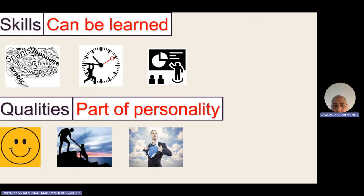Some of the skills you can write in the letter include: I can speak a language, I'm a committed person, I can communicate with and deal with people from different cultures, and I have IT skills. For personal qualities, you can write: I'm cheerful, I'm cooperative, I'm helpful, I'm brave, I'm intelligent, I'm smart — all qualities suitable for the job you are applying for.